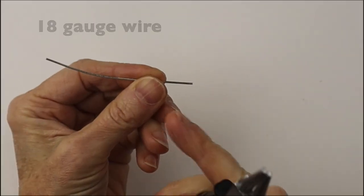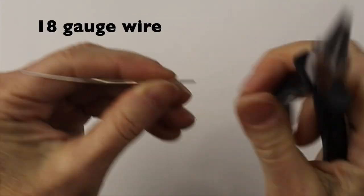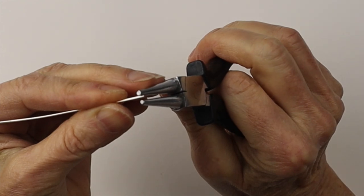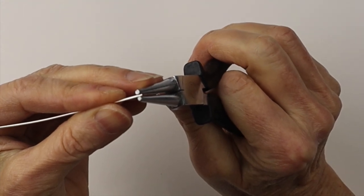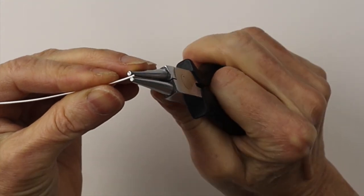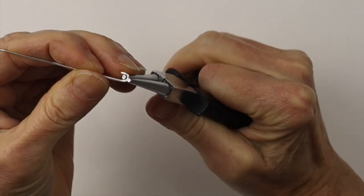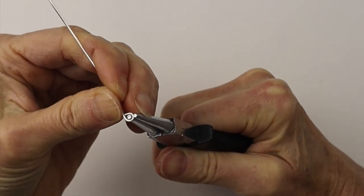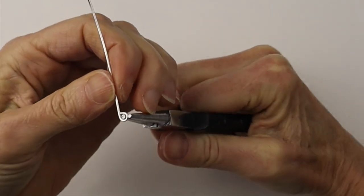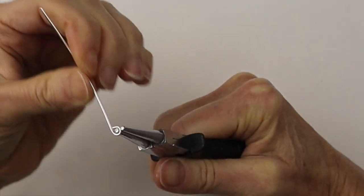Now I'll do one with the 18 gauge wire. I've already cut the end flush and I'm going to work from the end so I don't waste any wire. So we're just going to roll it around to make our teardrop shape, adjust it as you need, and straighten the wire.